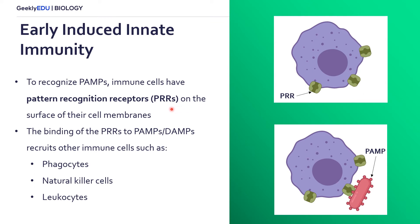PRRs are on the surface of the cell membranes of our innate immune cells. What happens is the PRRs will recognize and bind to the PAMPs or DAMPs, and once this binding occurs, the immune cell will then recruit or send the alarm for other killer cells such as phagocytes, natural killer cells, or leukocytes — white blood cells. Here we can see our immune cell with its pattern recognition receptor on the cell surface identifying a bacteria, where the little circles on the outside would be our PAMP. This binding will then signal the alarm for other immune cells to come and destroy the bacteria.